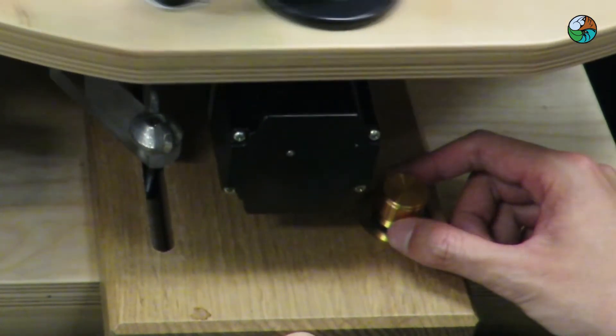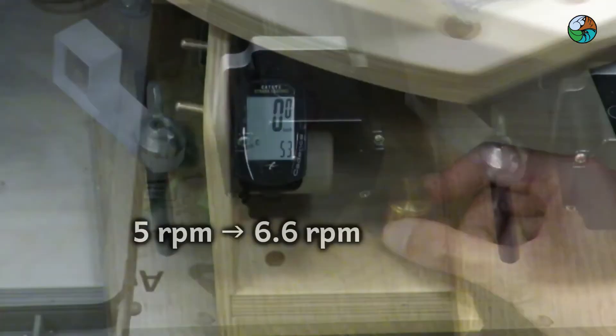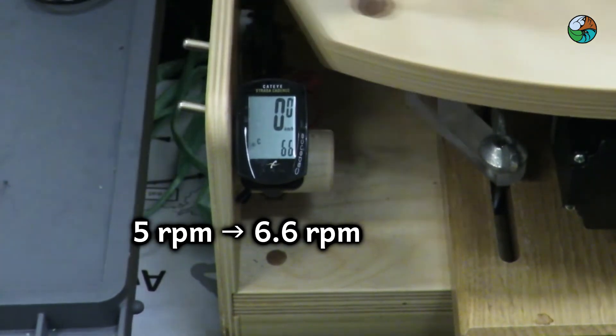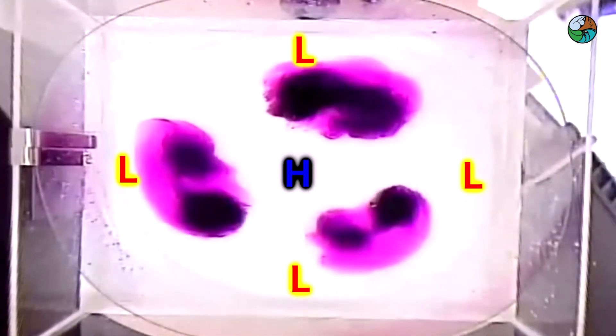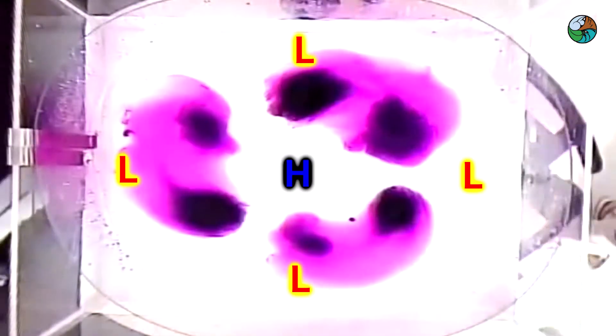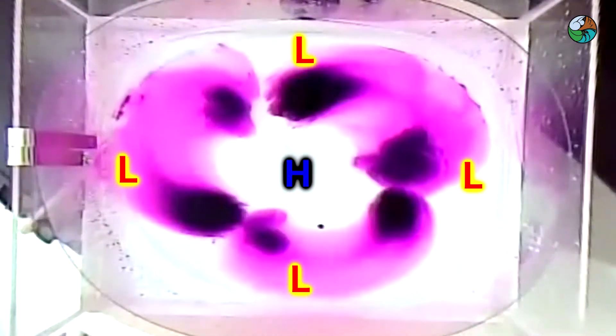The experiment can be done in another way. If we increase the rotation rate instead, a high pressure would be induced at the center and a low pressure at the rim of the tank. And this is the result.